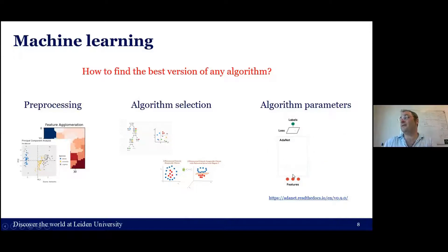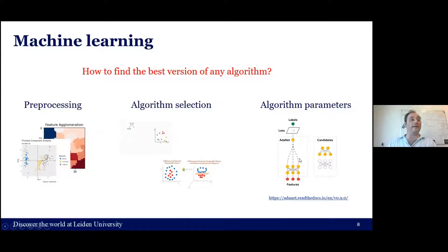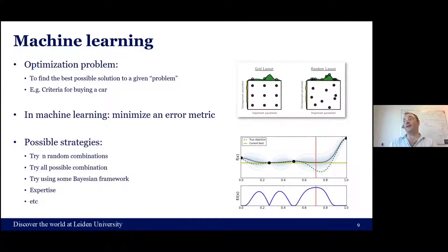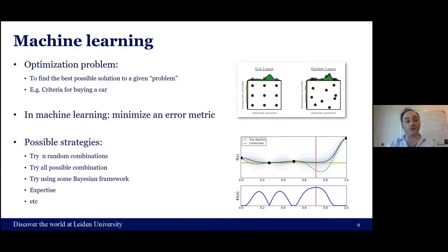How are we going to prepare the data, how to select the algorithm, and how to configure that algorithm — this can be seen as an optimization problem. Optimization is a field of mathematics that studies how to find the best combination of parameters to solve a certain issue. For example, if you want to buy a car and your criteria are color, electric engine, and price — how do you join all these parameters and find the best combination? In machine learning, we always try to minimize some error: classification error, autocorrelation error, some error metric.